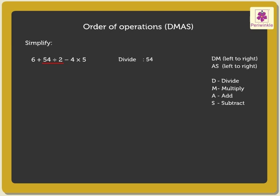54 divided by 2 is equal to 27. Now, we have 6 plus 27 minus 4 into 5.